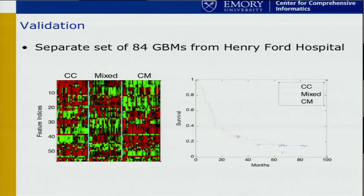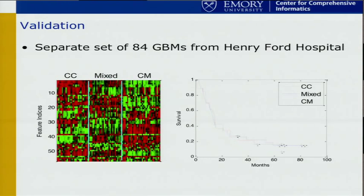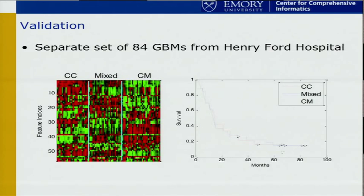We validated this finding in a separate set of GBMs from our collaborators at Henry Ford, doing a de novo clustering using the selected features from before. We immediately recognized the cell cycle cluster and the chromatin-modifying cluster. The protein biosynthesis cluster doesn't immediately appear — there's a mixed component that's in between. The survival trends remain the same as in the TCGA dataset, which is encouraging.